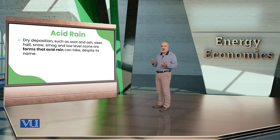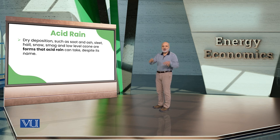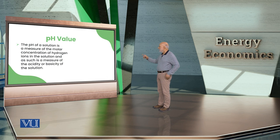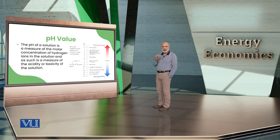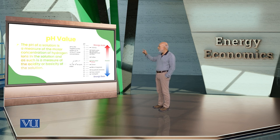Acid rain doesn't mean just water — anything can fall from above. So this is acid rain. The acidity we measure depends on hydrogen H⁺ concentration. The greater the concentration, the greater the acidity.